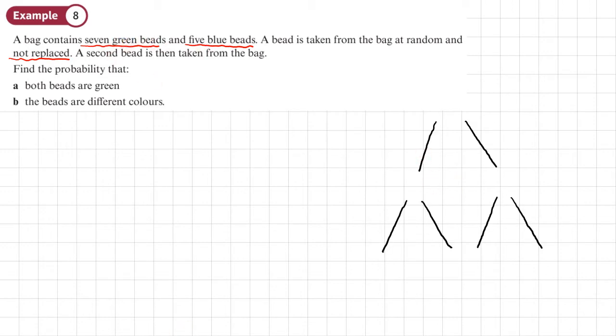So I need to put the outcomes green beads and blue beads. So green here, blue, that could be the first one that I pick. And the second one that I pick could be green or blue as well.